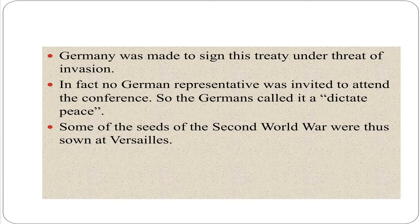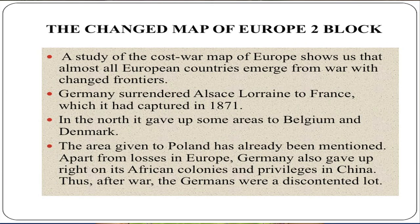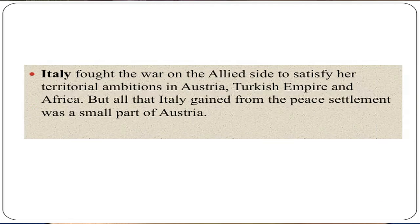Some of the seeds of the Second World War were thus sown at Versailles. A study of the post-war map of Europe shows that almost all European countries emerged from war with changed frontiers. Germany surrendered Alsace-Lorraine to France, which it had captured in 1871. In the north, it gave up some areas to Belgium and Denmark. Germany also gave up rights on its African colonies and privileges in China, leaving the Germans a discontented lot. Italy fought the war on the Allied side to satisfy her territorial ambitions in Austria, the Turkish Empire and Africa, but all that Italy gained from the peace settlement was a small part of Austria.